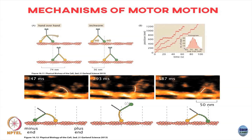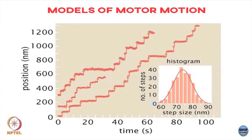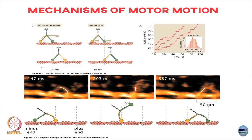You can construct single-molecule experiments and observe the position as a function of time — the position of this motor on the filament — and plot a histogram of step sizes it takes. You can see that the histogram has a peak at around 74–75 nanometers, which says that the motion this kinesin is doing is not the inchworm (which would have a peak around 36), but rather this hand-over-hand motion with a peak at around 74 nanometers.